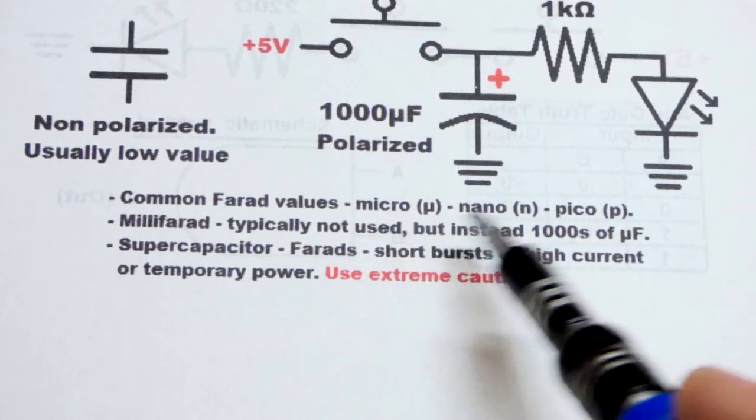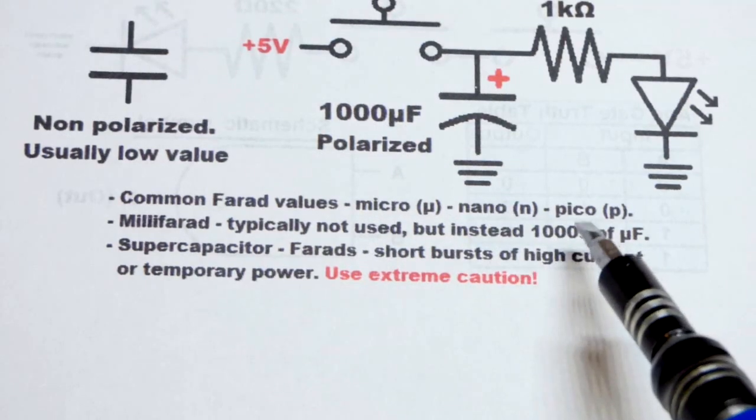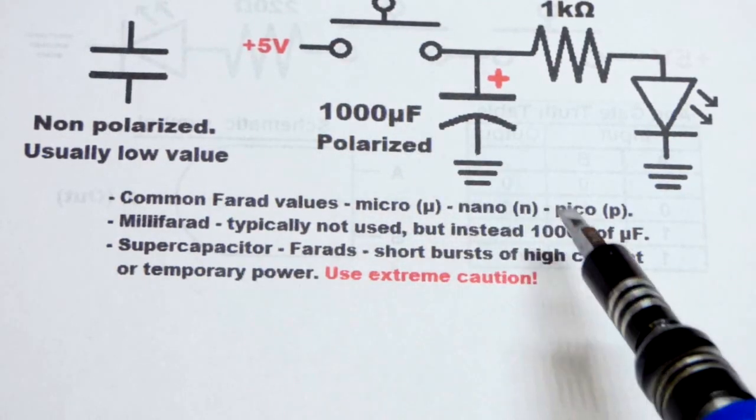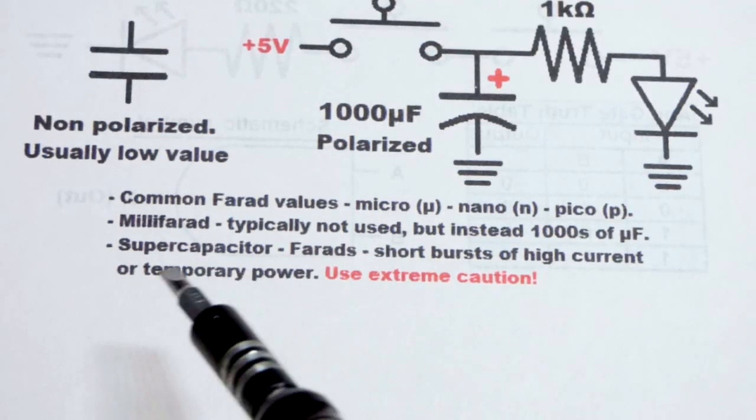That's just the way that it is. Nano is smaller than microfarad by a thousand, and then pico is smaller than a microfarad by a million. So that's into the one billionth of a farad.